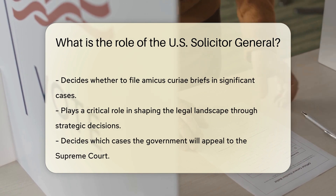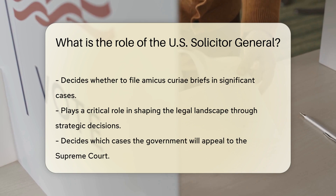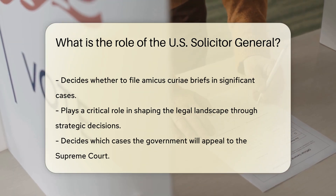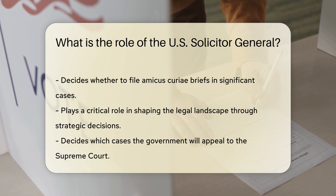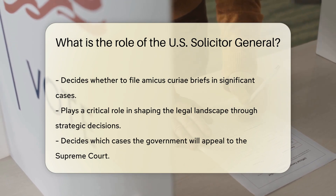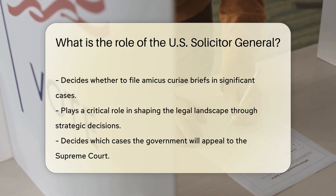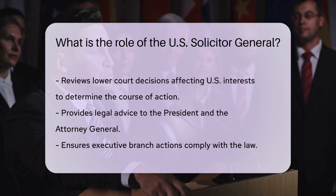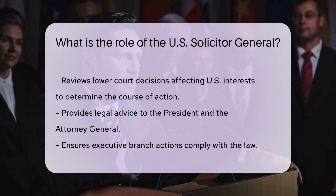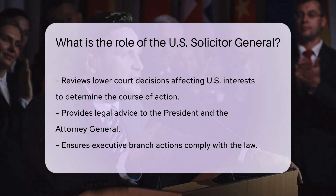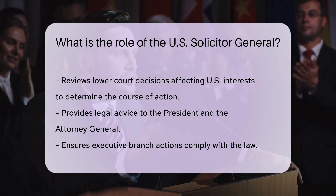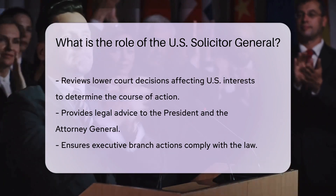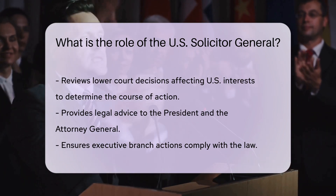The Solicitor General's office plays a critical role in shaping the legal landscape of the country through these strategic decisions. In addition to representing the government in Supreme Court cases, the Solicitor General also decides which cases the government will appeal to the Supreme Court. This responsibility includes reviewing decisions from lower courts that may affect the interests of the United States and determining the most appropriate course of action — whether to appeal, not to appeal, or to seek further review.